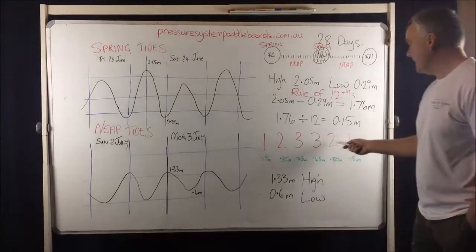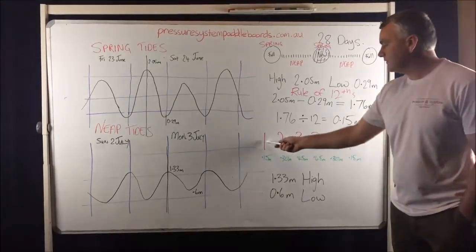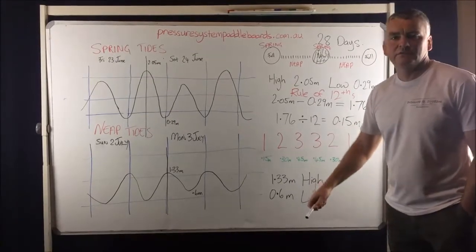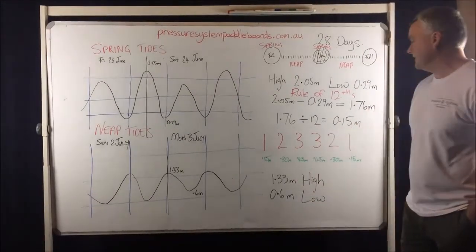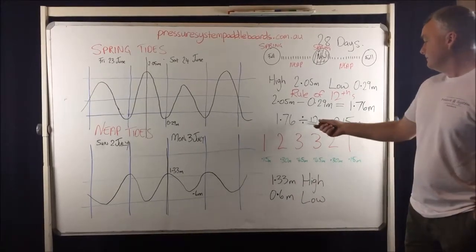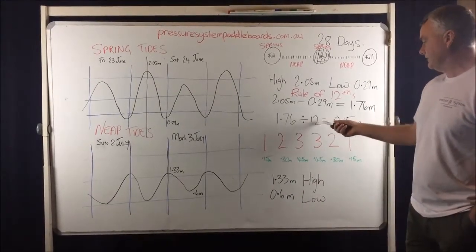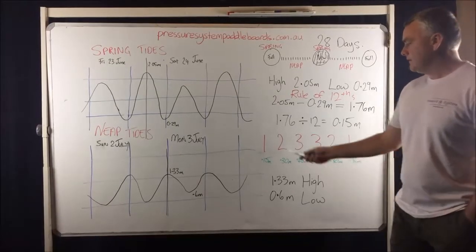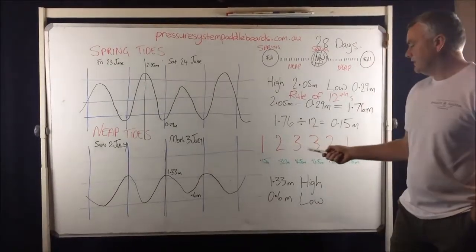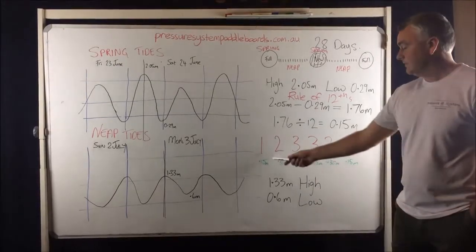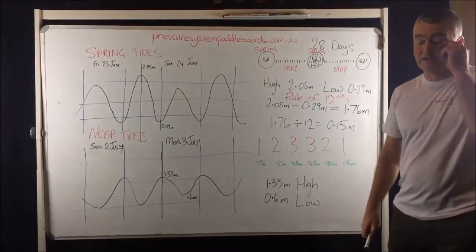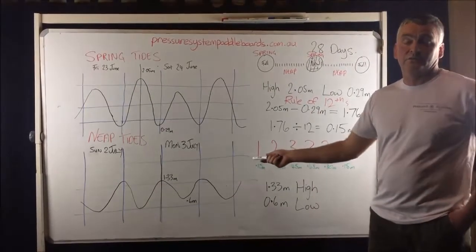Now if we have a look at this chart again, in the first hour the tide's going to move 1/12th. So that means it'll move 0.15 of a metre, because we've established that 1.76 divided by 12 is 0.15. Now in the second hour the tide's going to move 0.3 of a metre, 2 times 0.15. So it's going to be twice as fast in the second hour as it was in the first hour.